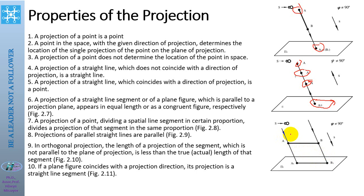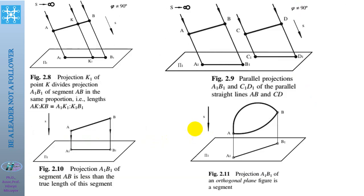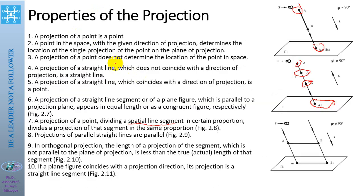The projection of a point divides a spatial line segment in a certain proportion, and it divides the projection of the segment in the same proportion. In orthogonal projections, the length of the projection of a segment which is not parallel to the plane of projections is less than the true or actual length of that segment.